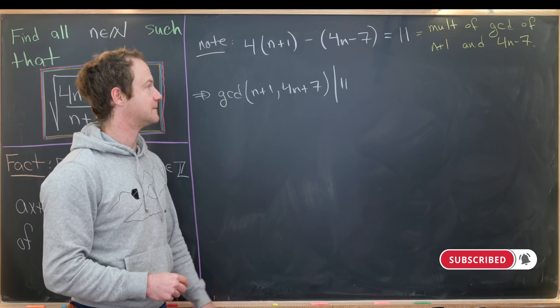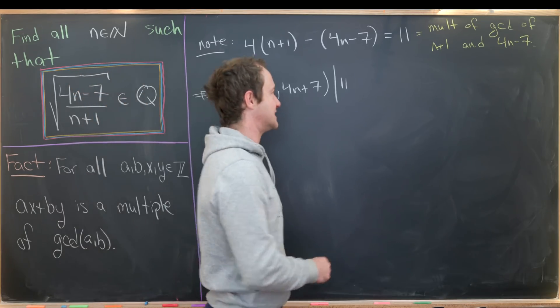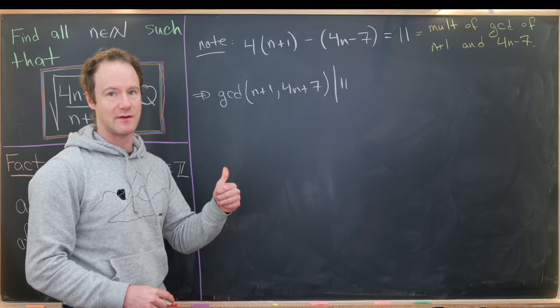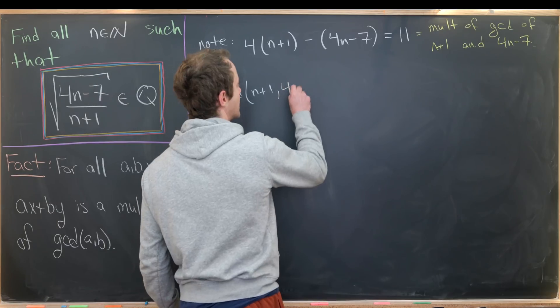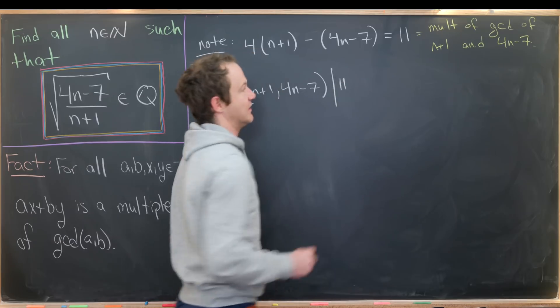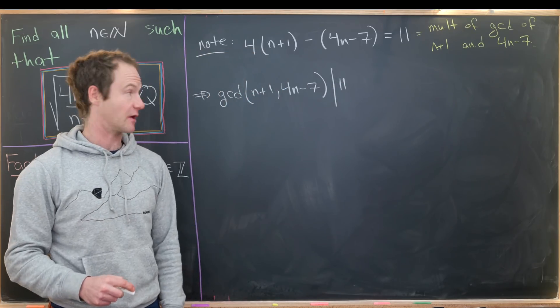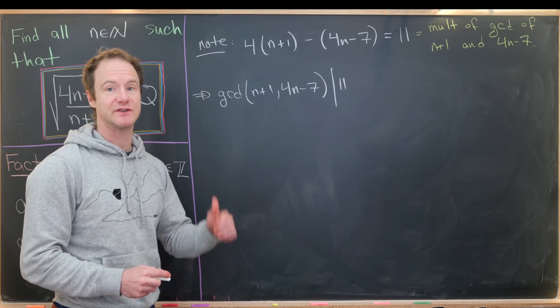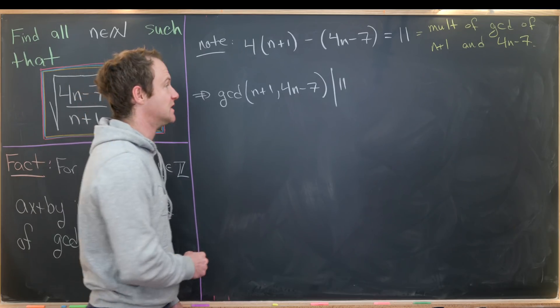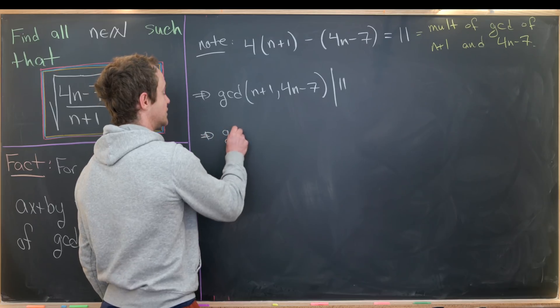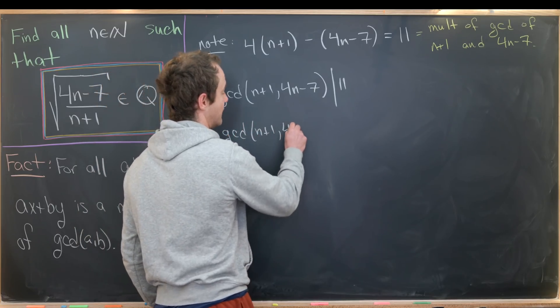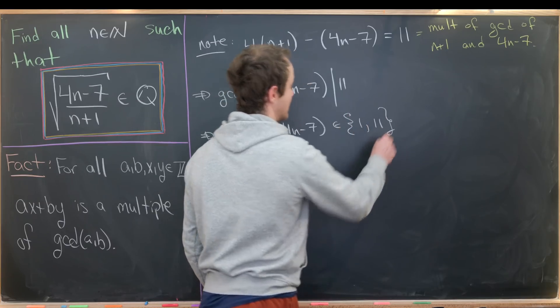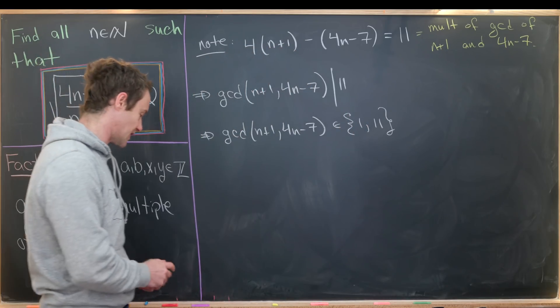So this divisibility relationship is exactly equal to saying that it's a multiple of the gcd. But notice that 11 is a prime, and there are only two things that divide prime numbers: the prime number itself and 1. Now 11 is a prime number, and every prime number has exactly two divisors, one and itself. So that breaks us into two cases: the gcd of n+1 and 4n-7 must come from the set {1, 11}.